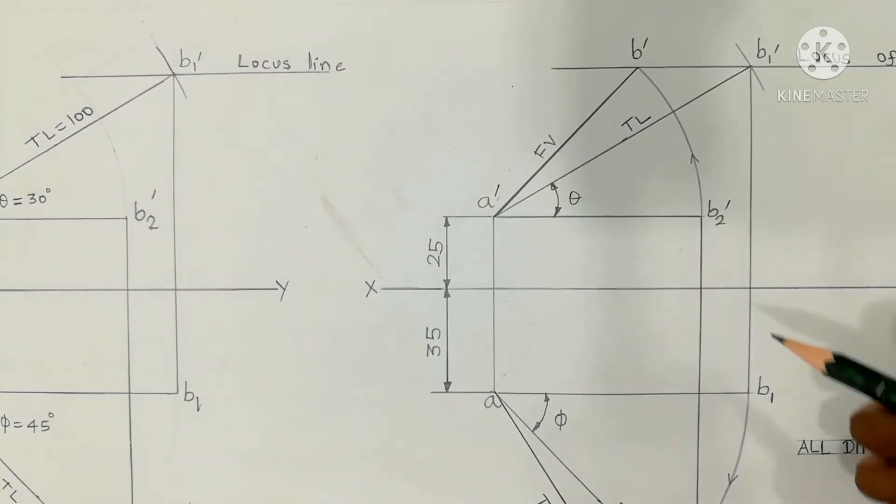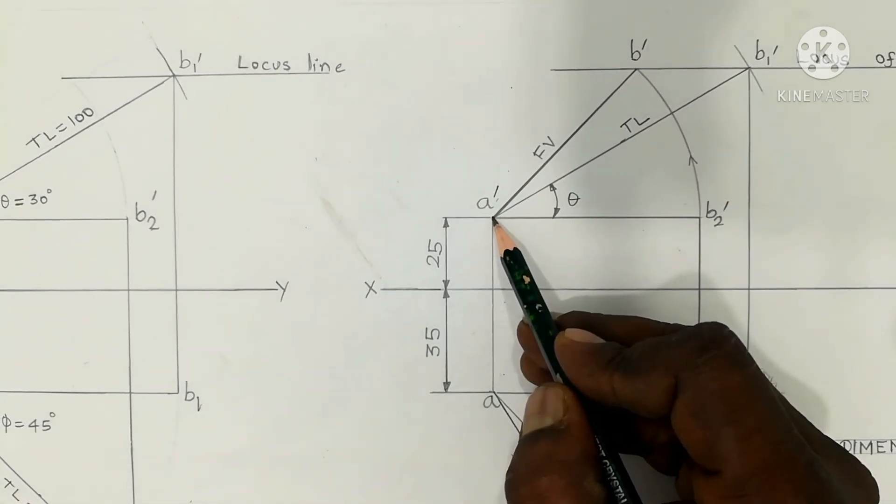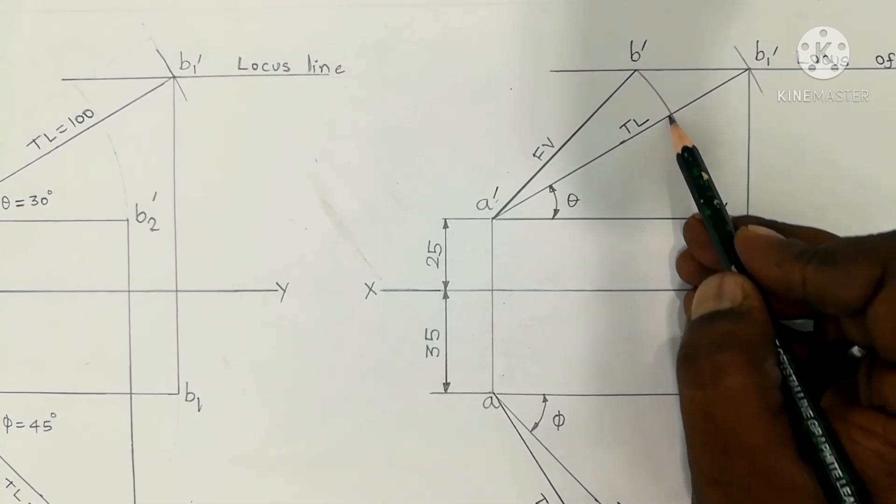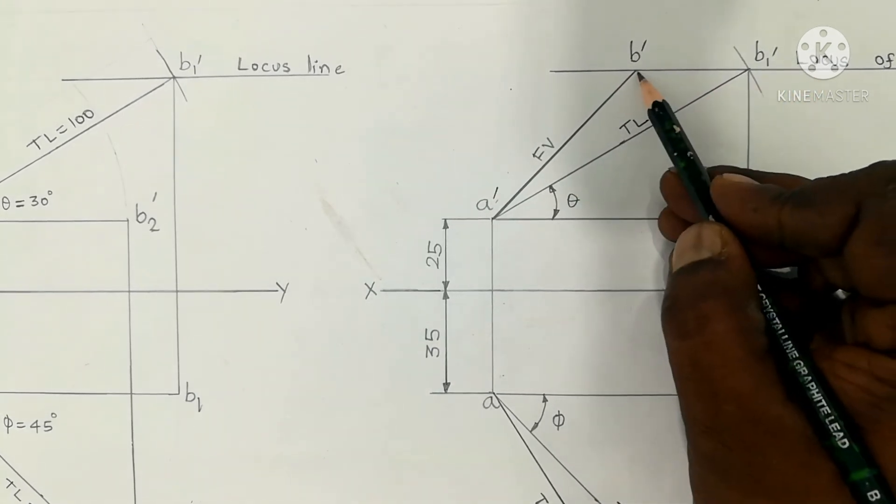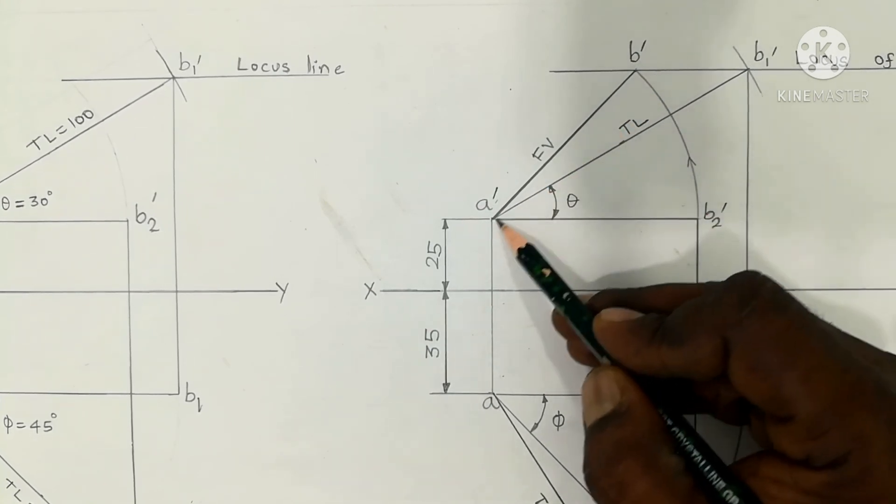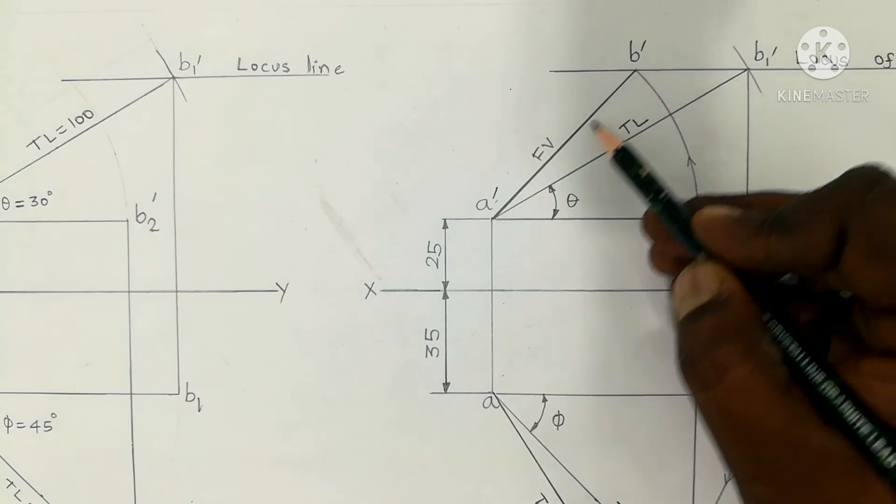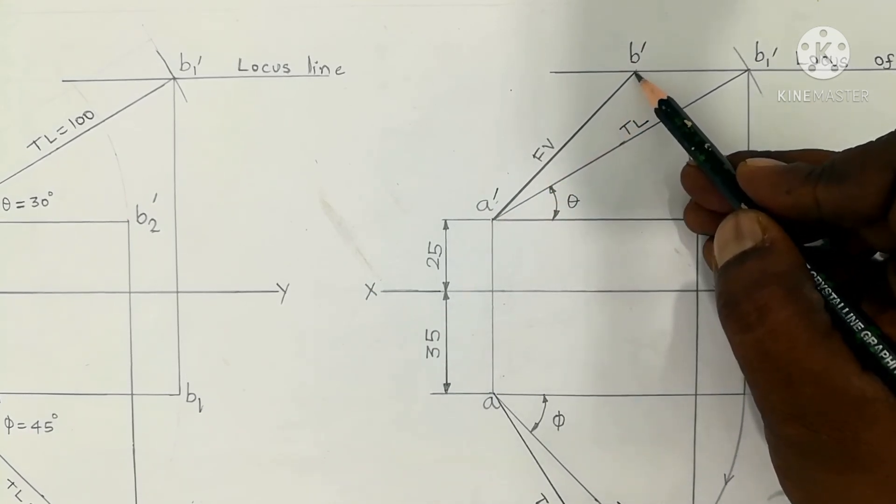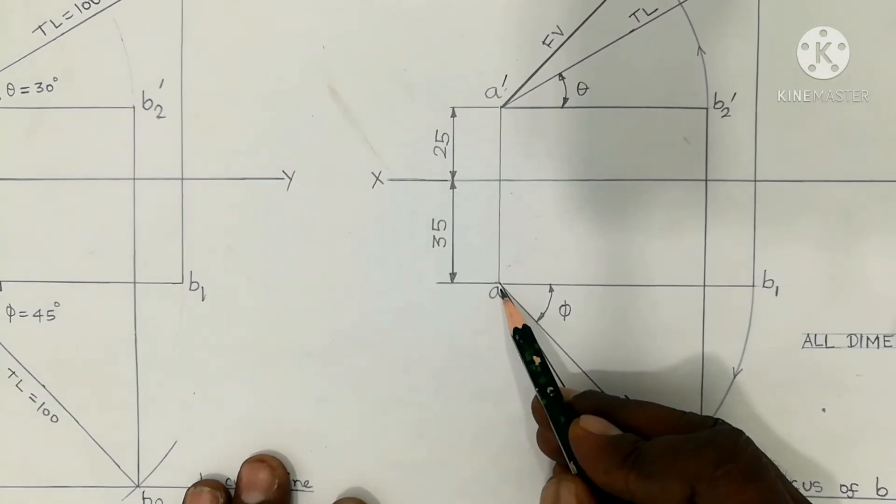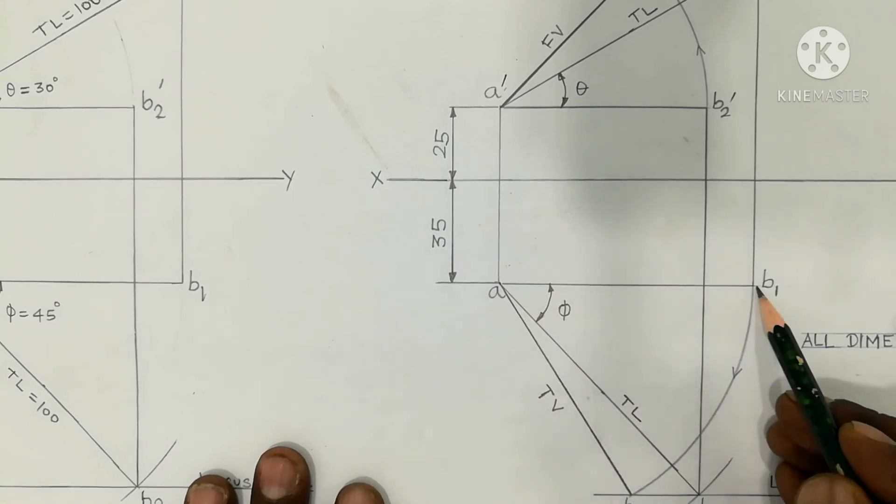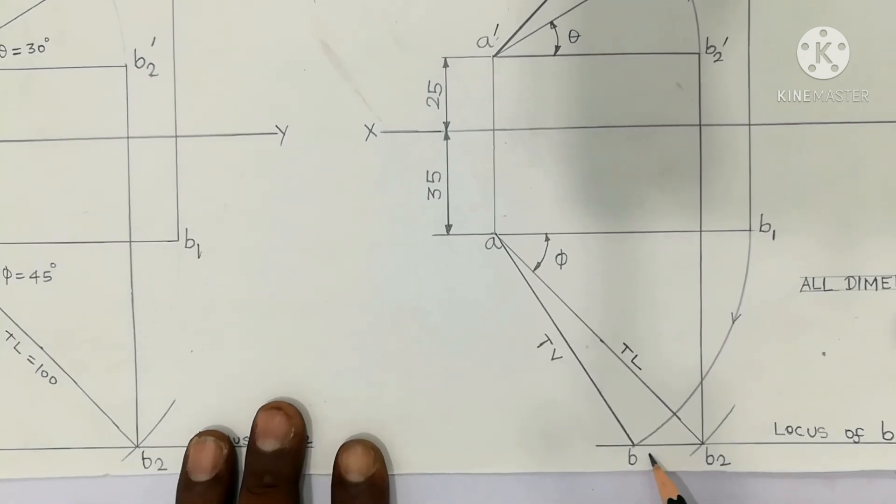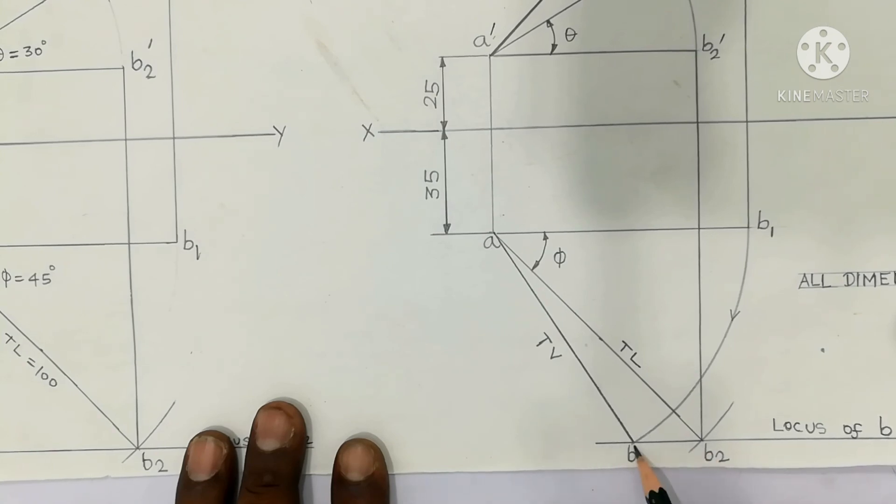So compass point or drop, that is A prime as center of your compass, A B2 prime has radius distance. Compass R, A B1 prime is radius. Below the XY line, in the arc, the locus line passing through B2, mid point B.